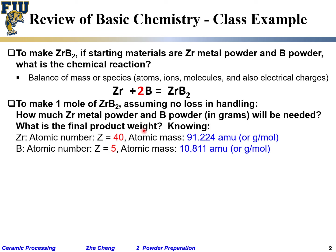For zirconium: atomic number Z = 40 (40th element, 40 protons in nucleus), atomic mass = 91.224 amu, or equivalently 91.224 g/mol. For boron: Z = 5 (fifth element, five protons), atomic mass = 10.81 amu or 10.81 g/mol.